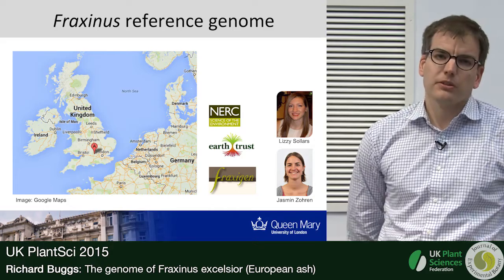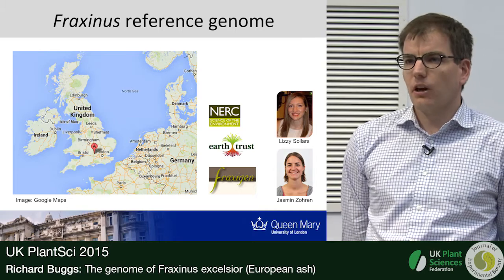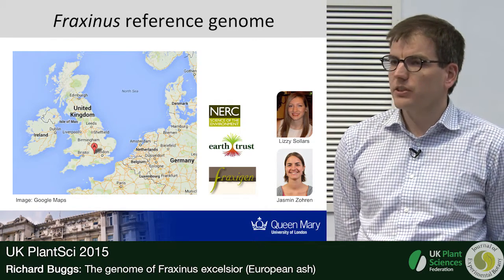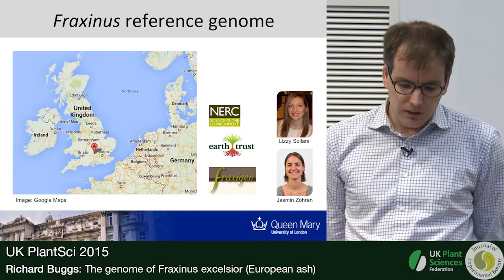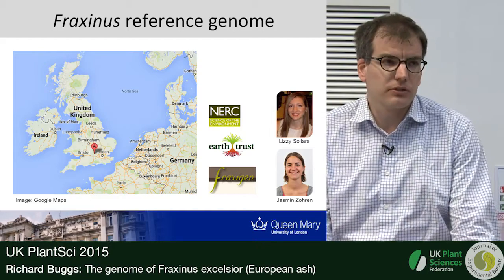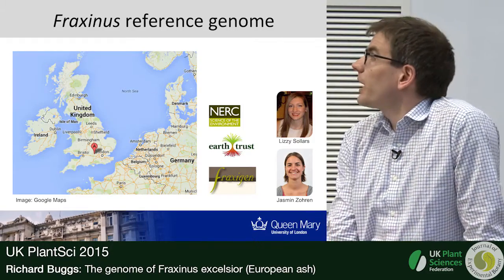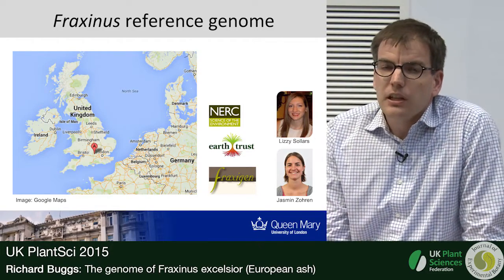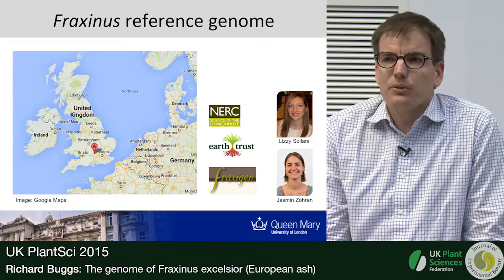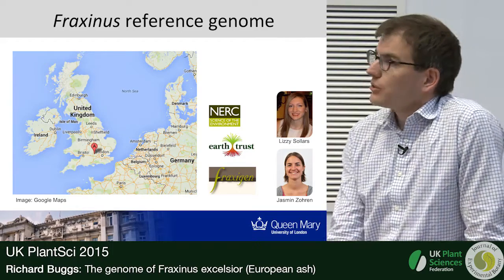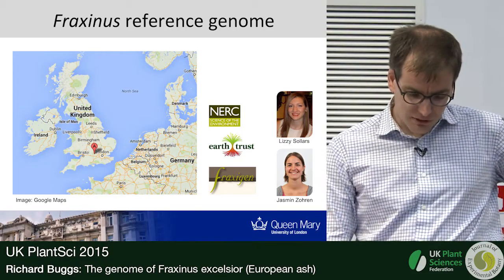When ash dieback first came into the UK, I was working on the genomics of birch and thought it would be good to start laying the foundations for genomic research on ash by sequencing the ash genome. I applied to NERC for an urgency grant and received about £65,000 to do a preliminary draft genome sequence. Fortunately, I had two excellent PhD students who had just started with me, funded by a Marie Curie ITN, and they both got drafted in to work on Fraxinus genomics and have done an absolutely excellent job.